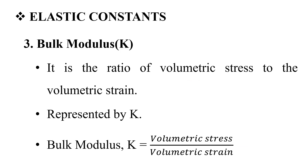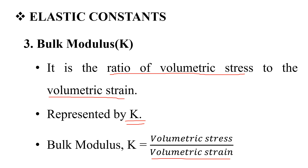The third elastic constant is the bulk modulus. The bulk modulus is the ratio of volumetric stress to volumetric strain. It is represented by the capital letter K. Mathematically, K is equal to volumetric stress divided by volumetric strain.